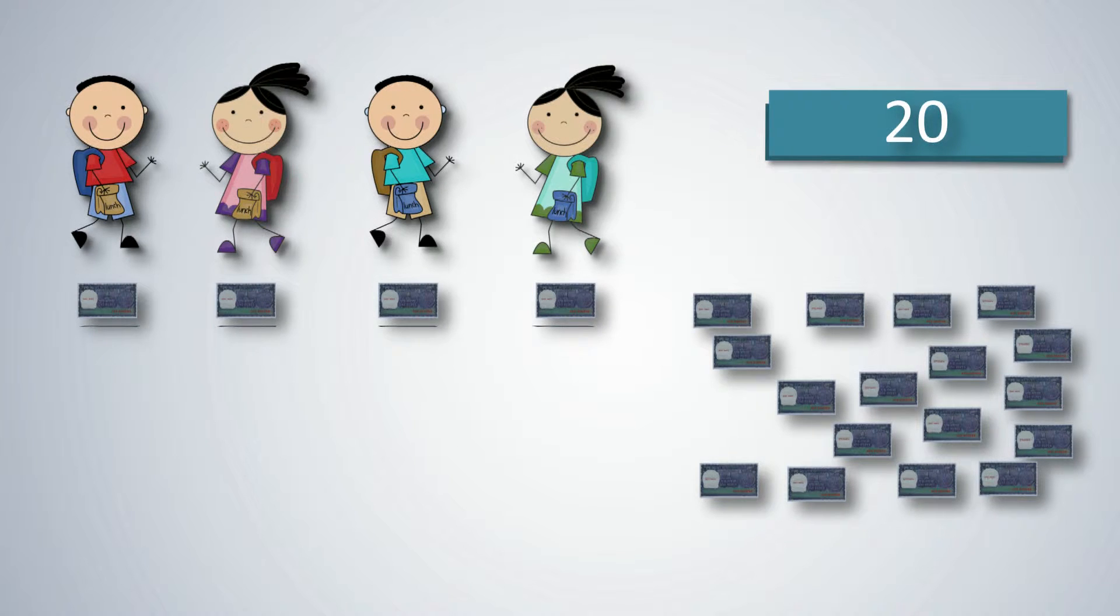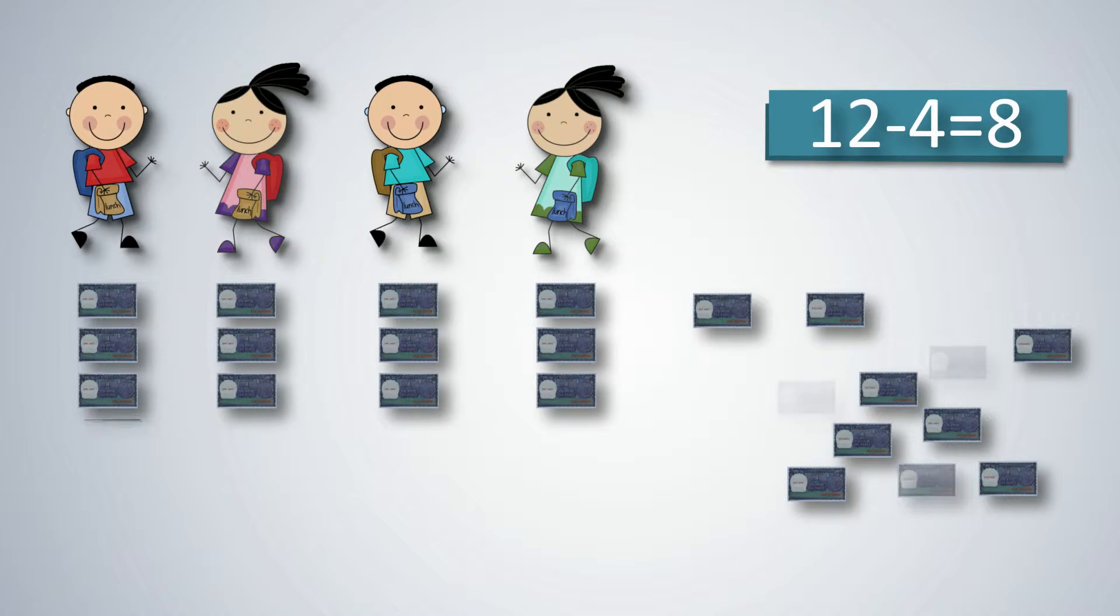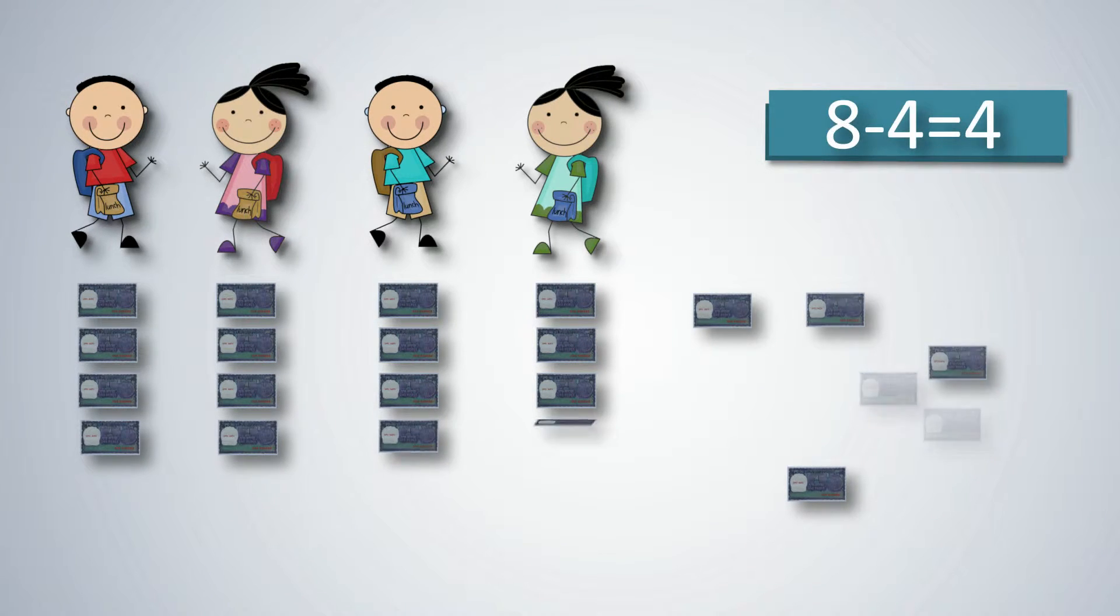After 1 round, we are left with 16 notes. 20 minus 4 which is 16. Each time we distribute 4, we are subtracting the same quantity, till we have no more notes left.